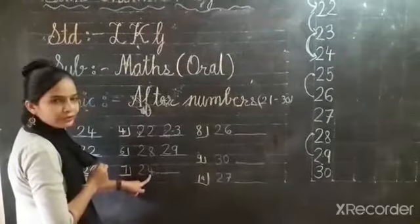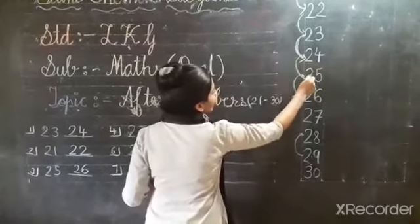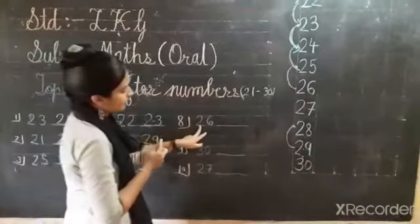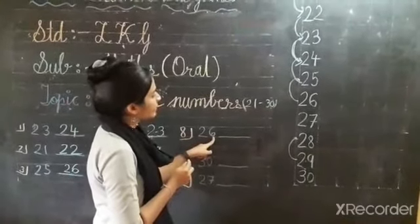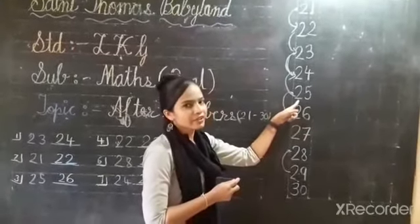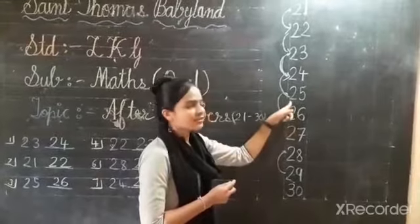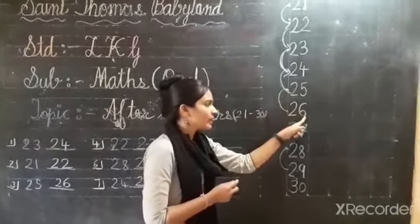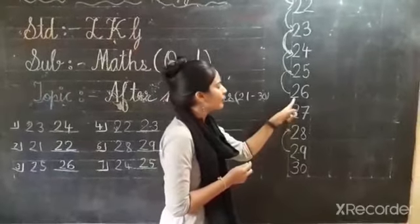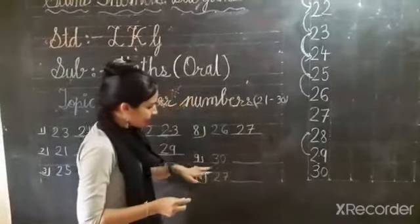24, 24. After 24 — what will come? You can see here: 24, 24. After comes 25. See, what is this? 26, 26. Here: 26, 26. After 26 — 25 will come? No. After 26 — 27, 27 will come. Now 30.